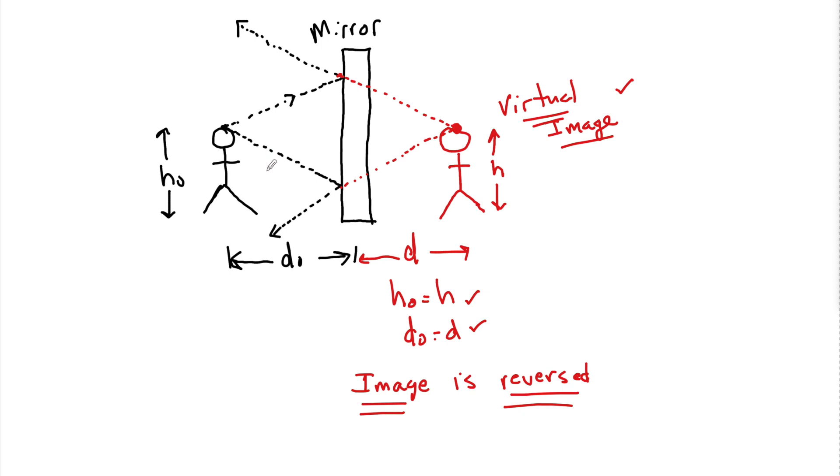That's pretty much it on the law of reflection. Just remember, the law of incidence equals the law of reflection. The angle is always measured from the normal, not from the surface. And that images bounced off a plane mirror are virtual. They have the same height at the same distance. And they're reversed. Any questions? Let me know in the comments below. Have yourself a great day.